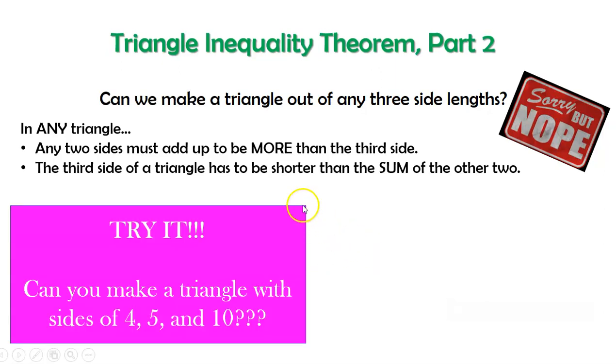Let's look at this one. Could we make a triangle with side lengths of 4, 5, and 10? What do you think? Could I do that using this rule? Could I take two sides, any two sides, add them up and have them be more than the third side?